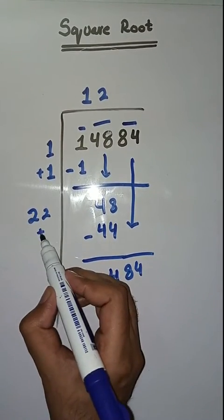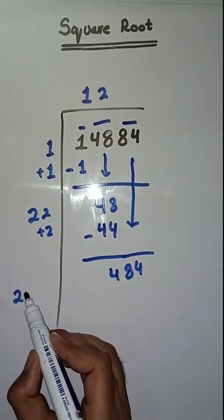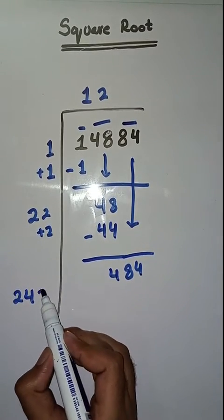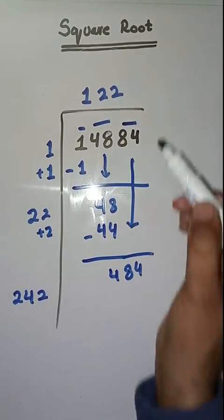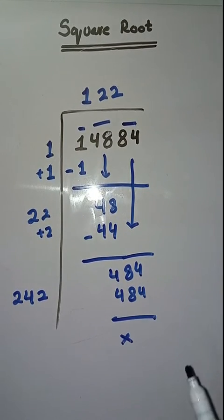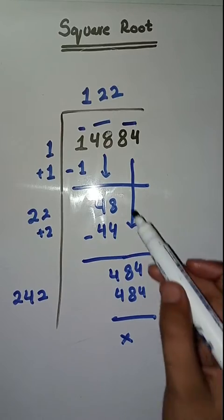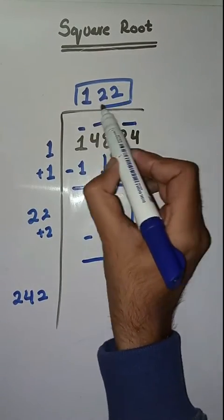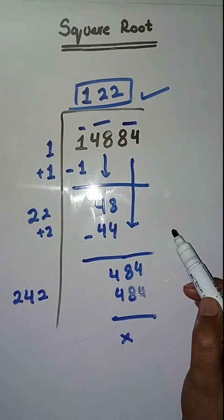So here we will take a number 2. Two forty two, two zero four eighty four. So he completely solve ho chuka hai. So square root of fourteen eight eighty four is one twenty two. Hopefully you like this video.